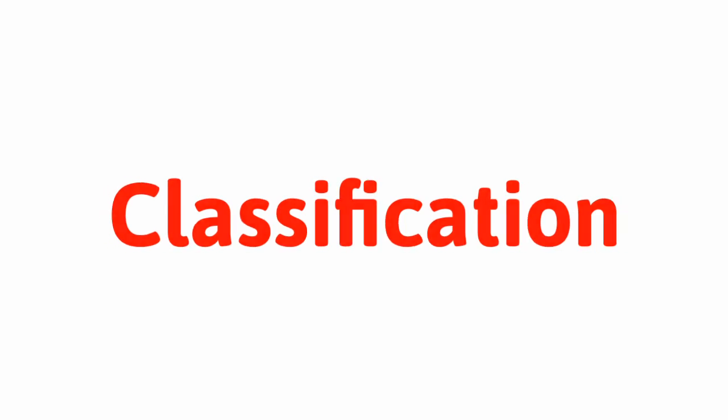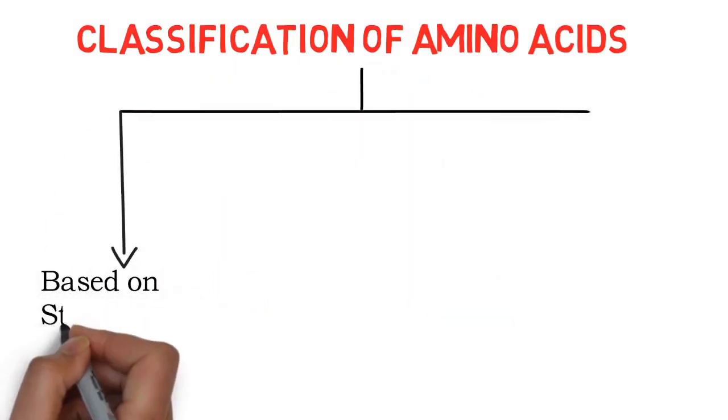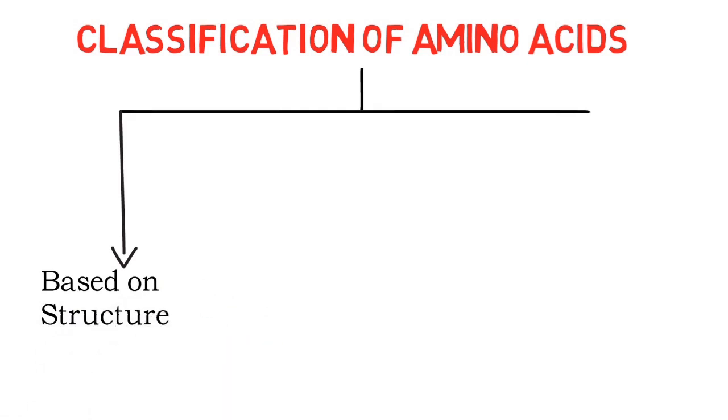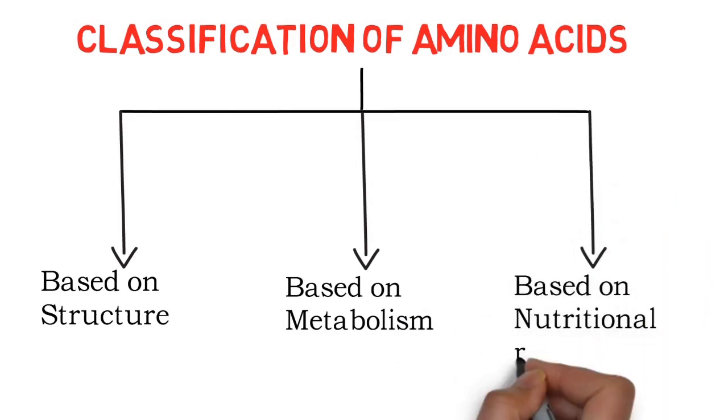Now we will see the classification of amino acids. We can classify amino acids by three ways: first is based on structure, second is based on metabolism, and third is based on nutritional requirements.